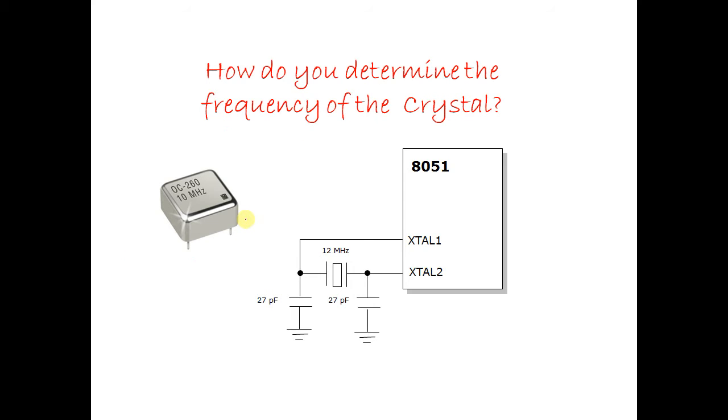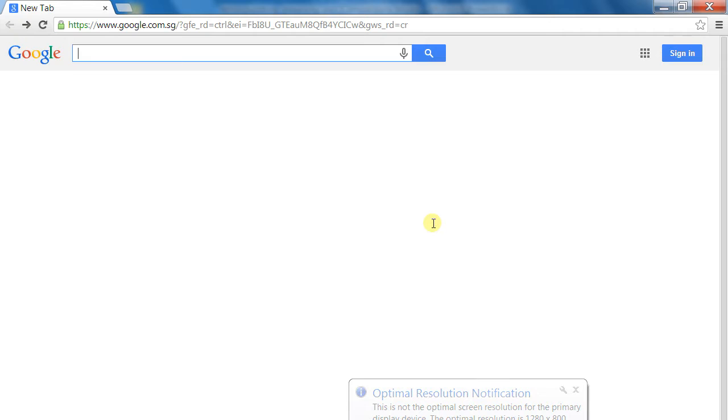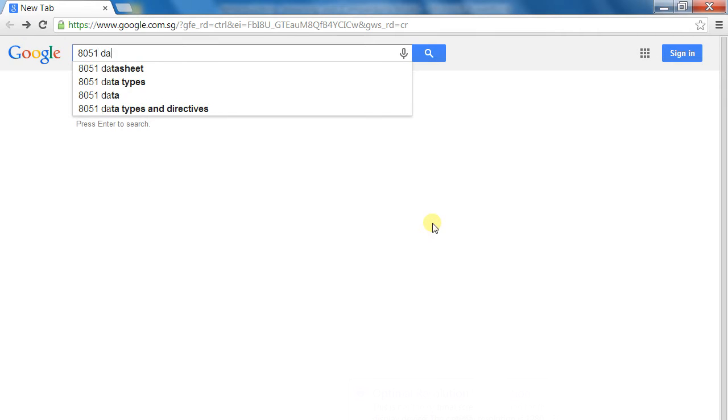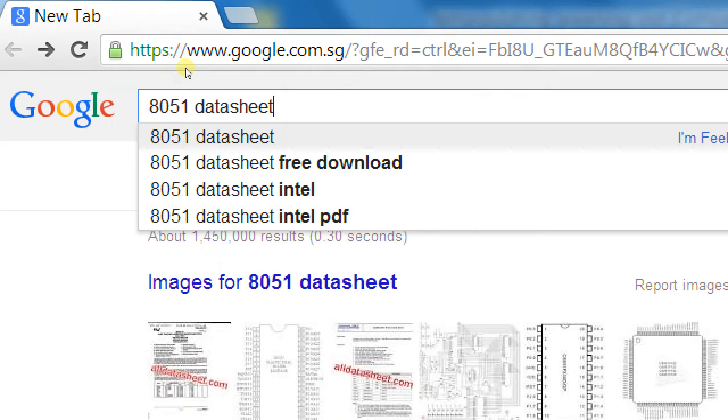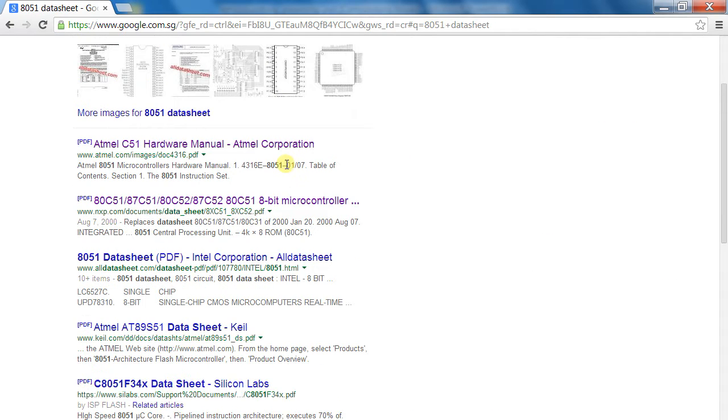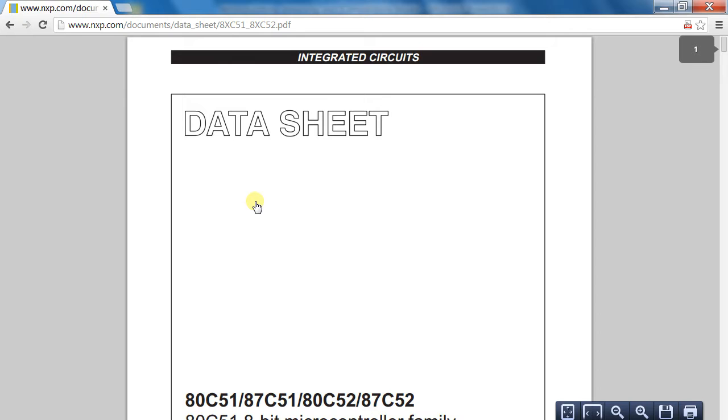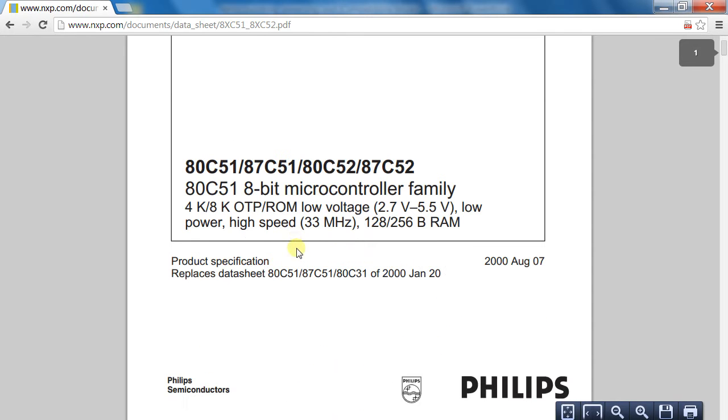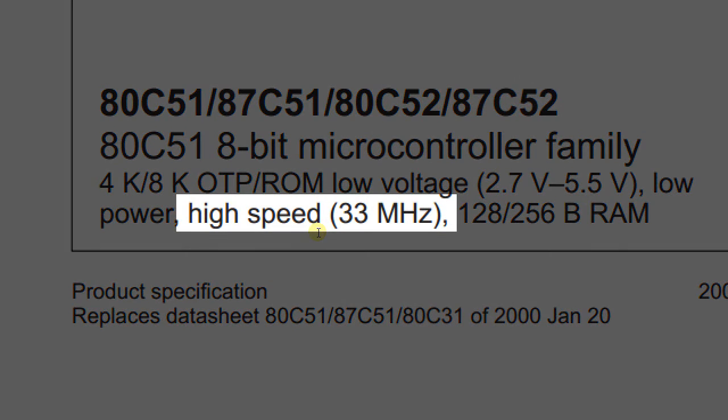How do you determine the frequency of the crystal? This information is available from the 8051 datasheet. Let's choose the NXP 80C51. The maximum oscillating frequency for this 8051 is 33 MHz.